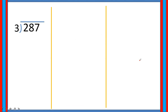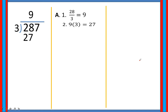Example: 287 divided by 3. 287 is called the dividend and 3 is called the divisor. Let's divide now. Let's have 28 divided by 3, that is equal to 9. We place that above the dividend. After that, you multiply the quotient and the divisor — that's 9 times 3 is equal to 27 — and we place that below the dividend.